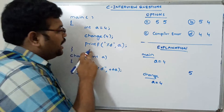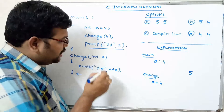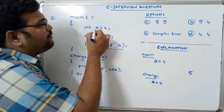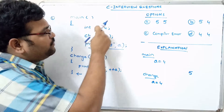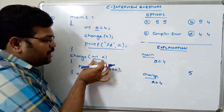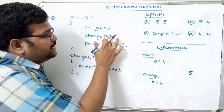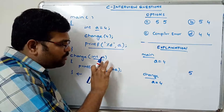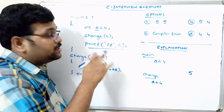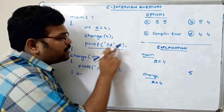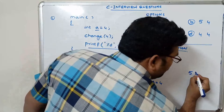Don't get confused — this 'a' in main is different from the 'a' in the change function, because these are local variables. The scope of the variable in main is within the main function, and the scope of the variable in change is within the change function. By default, this is a call by value, so whatever changes we make on the formal parameters will not affect the actual parameters.